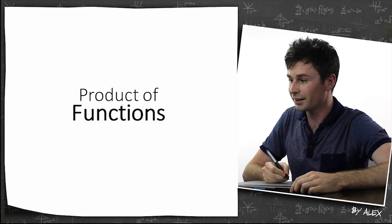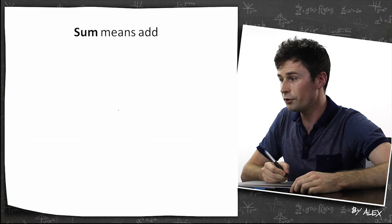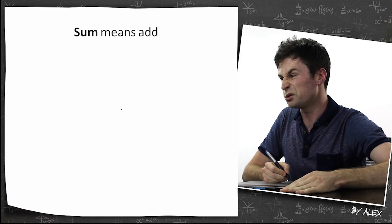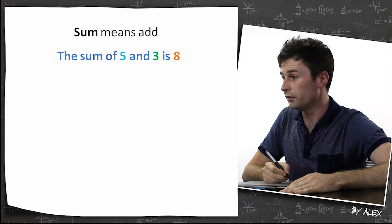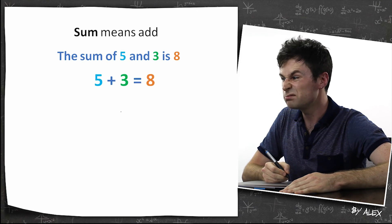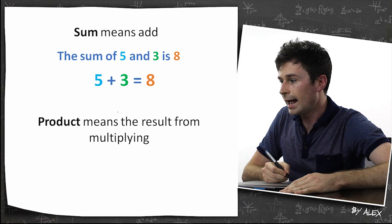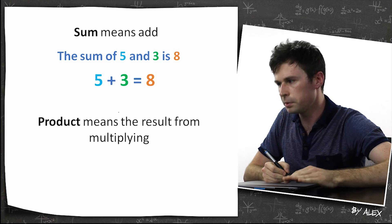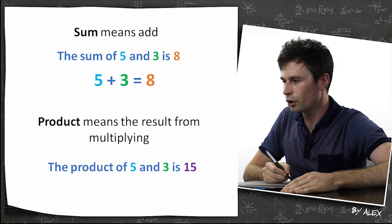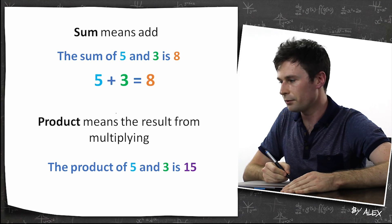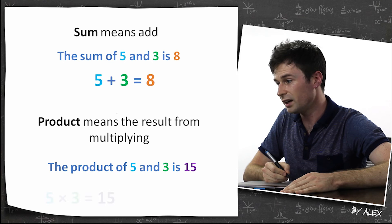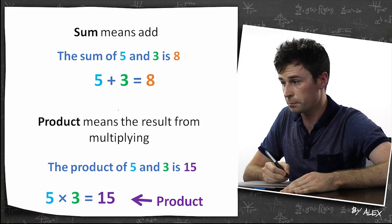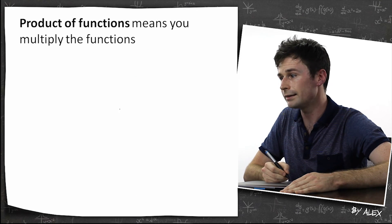Let's look at the product of functions. Sum obviously means to add — so the sum of five and three is eight. Product means the result from multiplying — so the product of five and three is 15, because five times three equals 15. So product means multiplying.